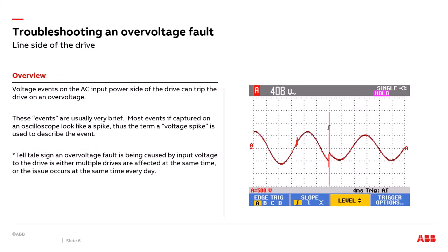We'll start by discussing scenarios where the line side of the drive is causing the overvoltage fault. Line-side events are usually very brief in time and high in magnitude — a term used to describe them is voltage spike. An oscilloscope is the best tool to capture these events. If you use a multimeter, you'll need a peak voltage setting, as the basic RMS setting will average out and filter the spike so you'll never see it. A quick indicator that the line side is the cause: if faults are occurring on multiple drives at the same site, or at the same time every day, this 99% of the time means the overvoltage is coming from the line side.